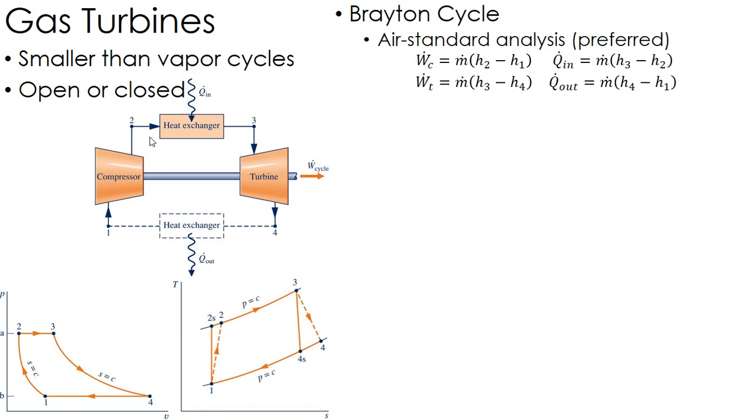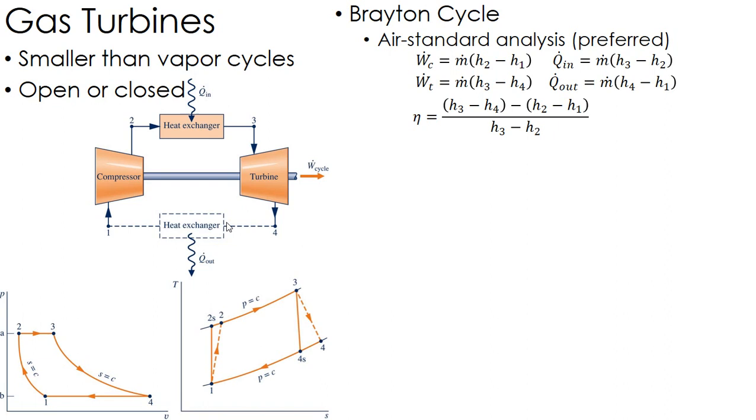For the air standard analysis, we're going to look up our H values from the table. Once I get the H values, basically work and heat transfers are just delta H's, just like they were with the vapor power cycle. The efficiency is work of the turbine minus work of the compressor all over Q in.